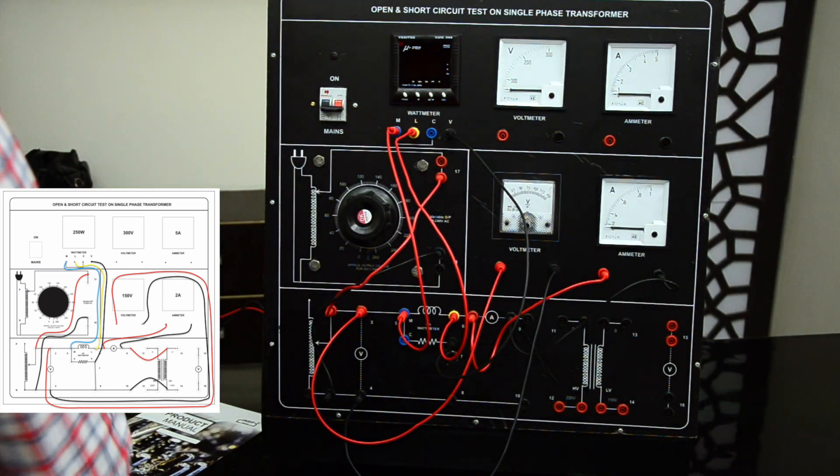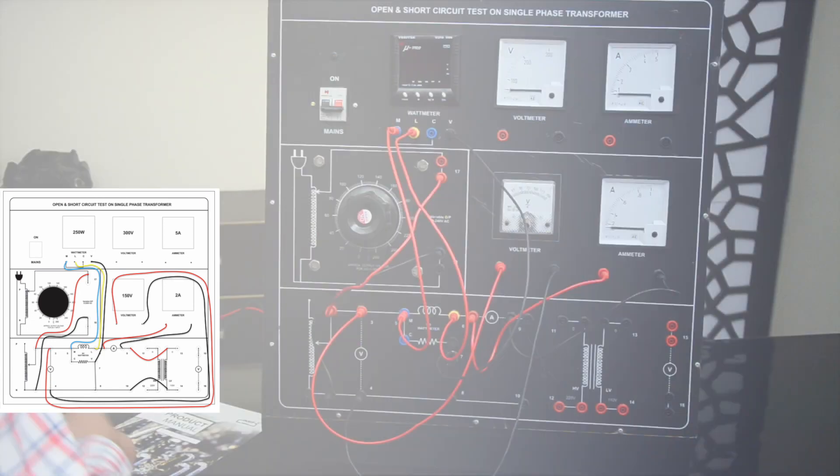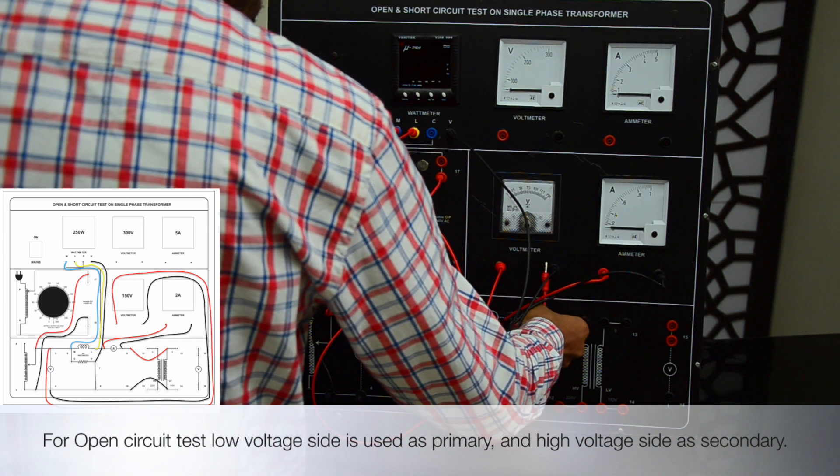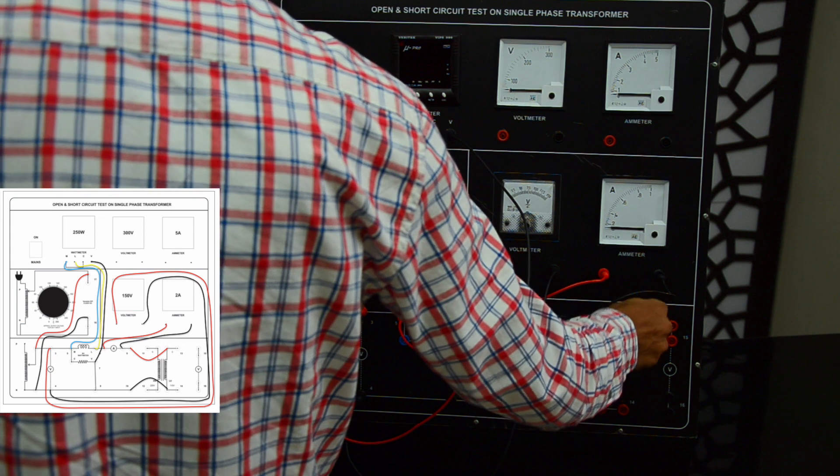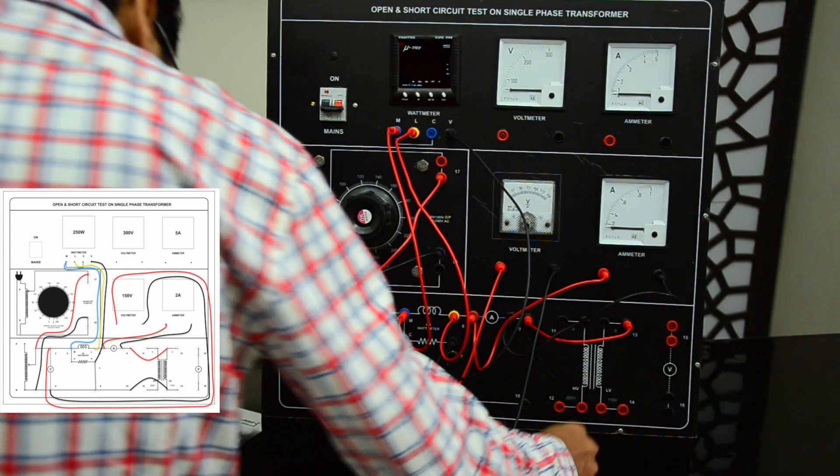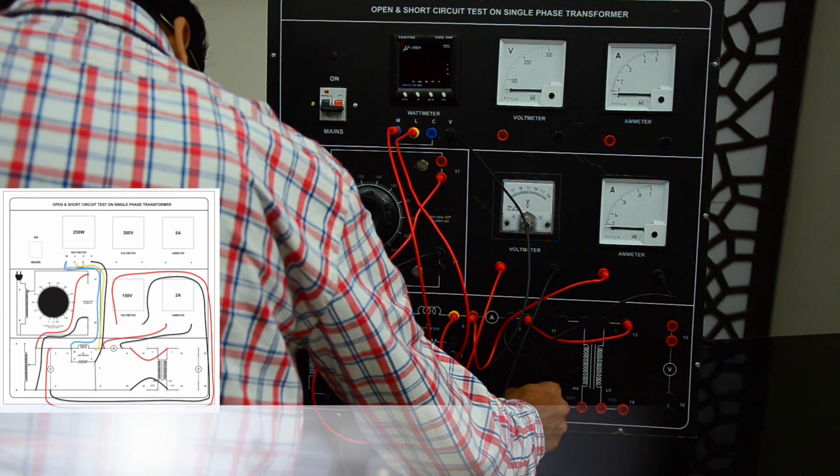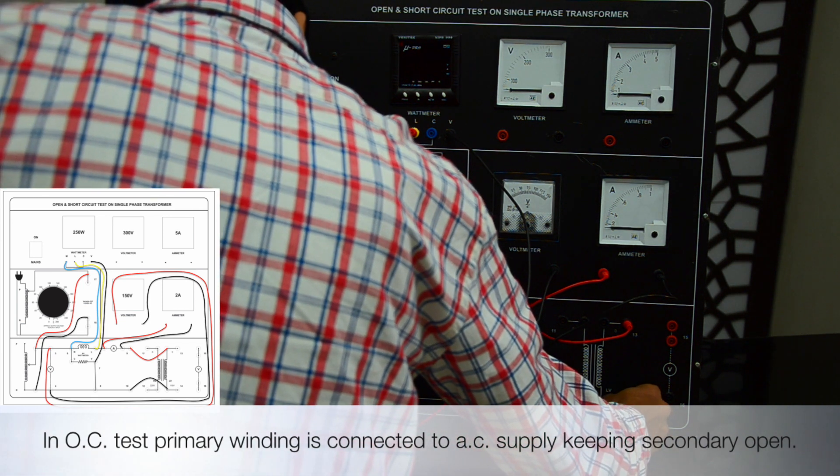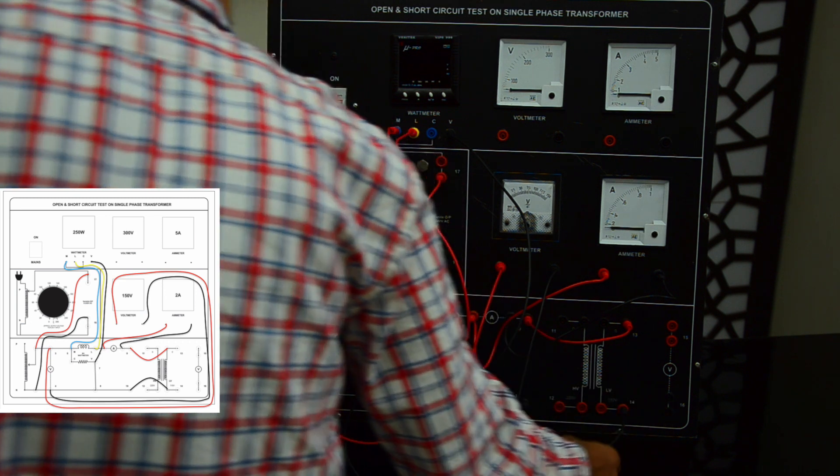For open circuit test, low voltage side is used as primary and high voltage side as secondary. In OC test, primary winding is connected to AC supply keeping secondary open.